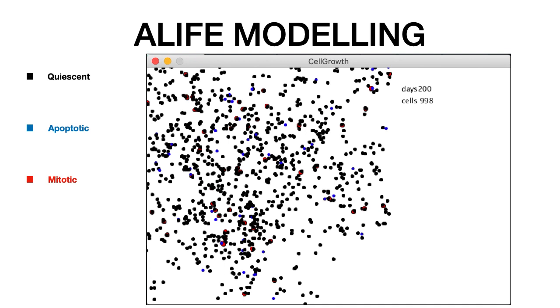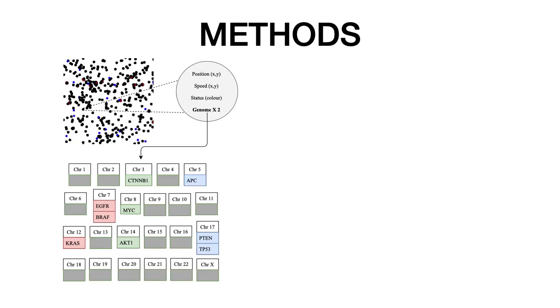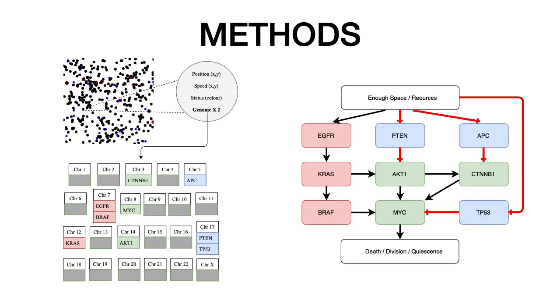To investigate this, we implemented these two mechanisms in an off-lattice agent-based model of cells that gives rise to emergent homeostasis. We equip each cell with a diploid genome, 23 pairs of chromosomes, with key genes in a gene regulatory network.